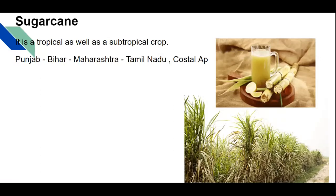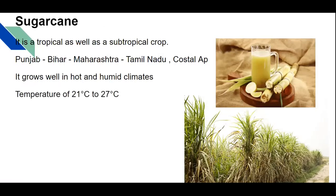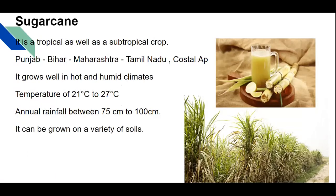The sugarcane crop grows well in hot and humid climate. It requires a temperature of 21 to 27 degrees Celsius, and an annual rainfall of 75 to 100 centimeters. It can be grown in a variety of soils. Mainly we see sugarcane cultivation in Punjab, Uttar Pradesh, Bihar, Maharashtra, Tamil Nadu, and coastal Andhra Pradesh.